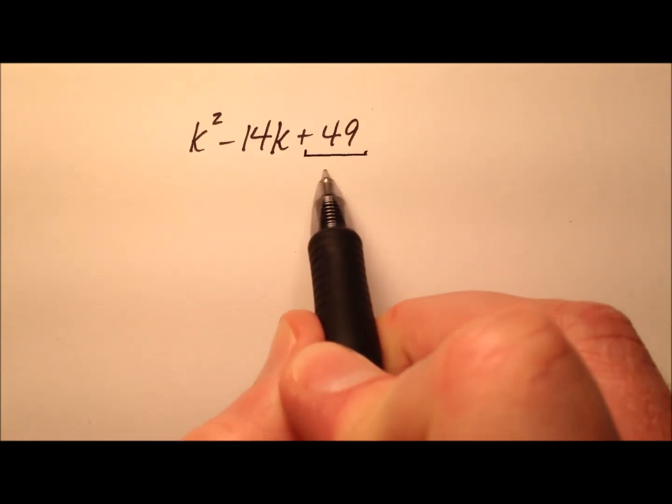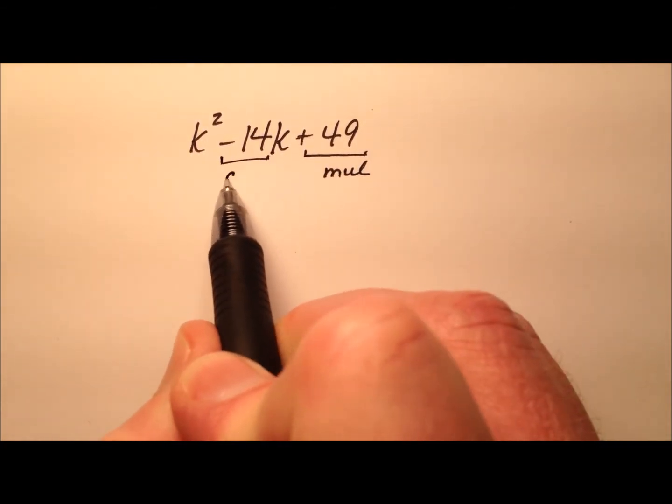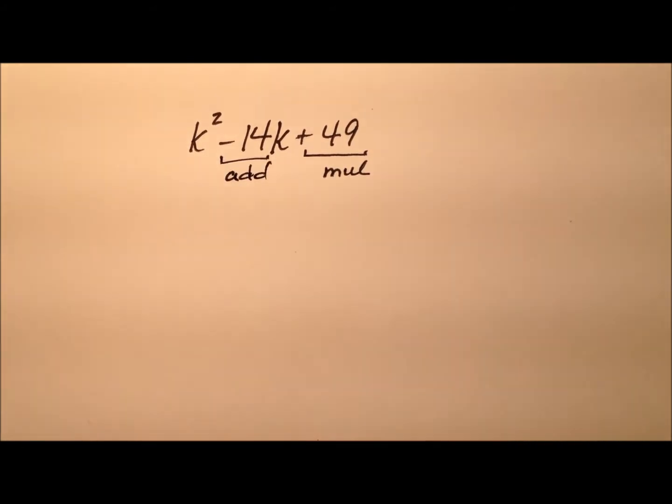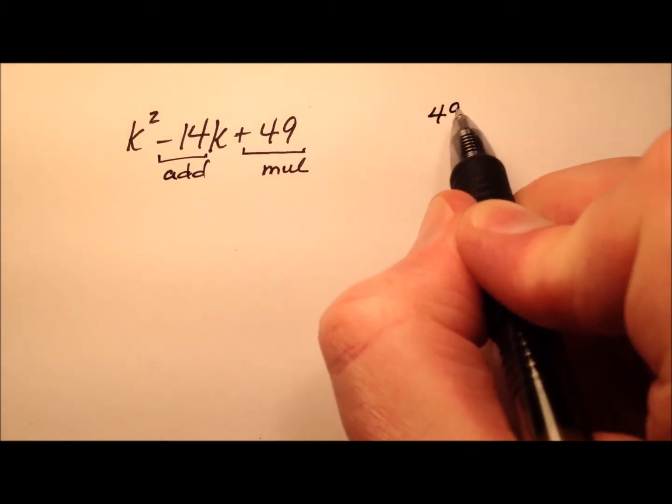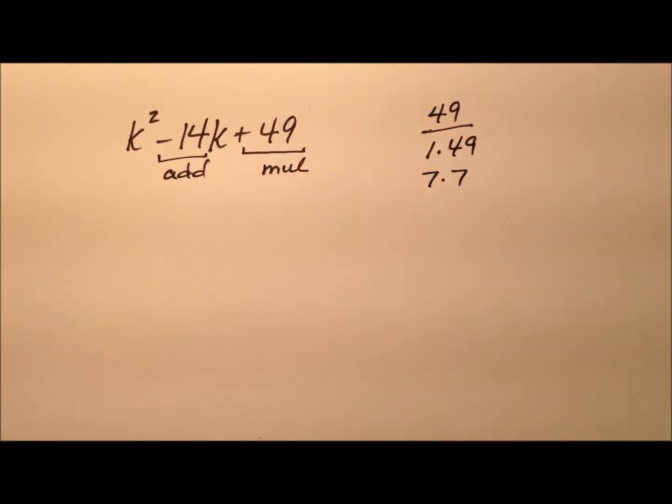So that means I'm looking for two numbers that multiply to make a positive 49 that add to make negative 14. So factors of 49 are 1 times 49 and 7 times 7.